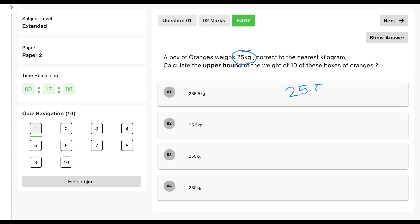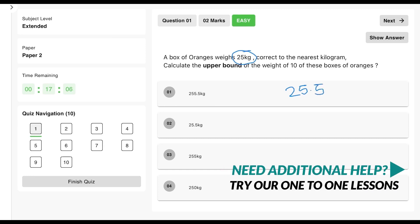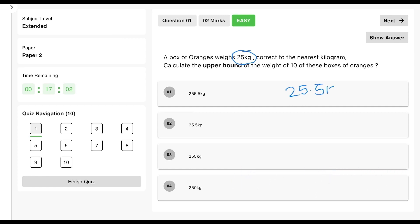Because we're looking at the nearest kilogram, we want to go up. So 25.5 kilograms is the upper bound for one box. Then when we multiply by 10 to get the upper bound for 10 boxes, this is going to come down to 255 kilograms.